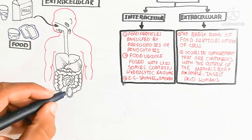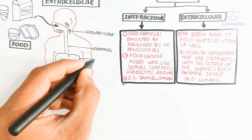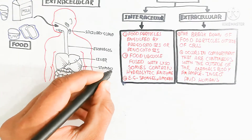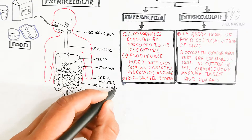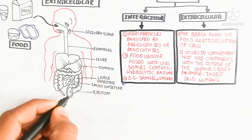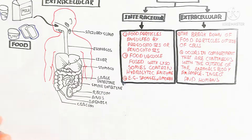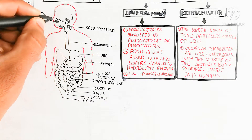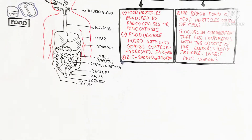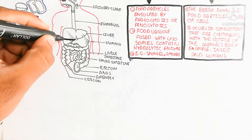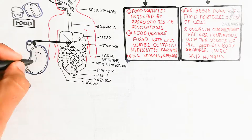For extracellular digestion, the salivary gland uses exocrine enzymes for digestion of carbohydrates. The salivary glands are of three types: parotid glands, submandibular, and sublingual glands. Other parts of the digestive system include the esophagus, liver, stomach, large intestine, small intestine, rectum, anus, appendix, and cecum. The oral cavity is used for partial digestion of food.